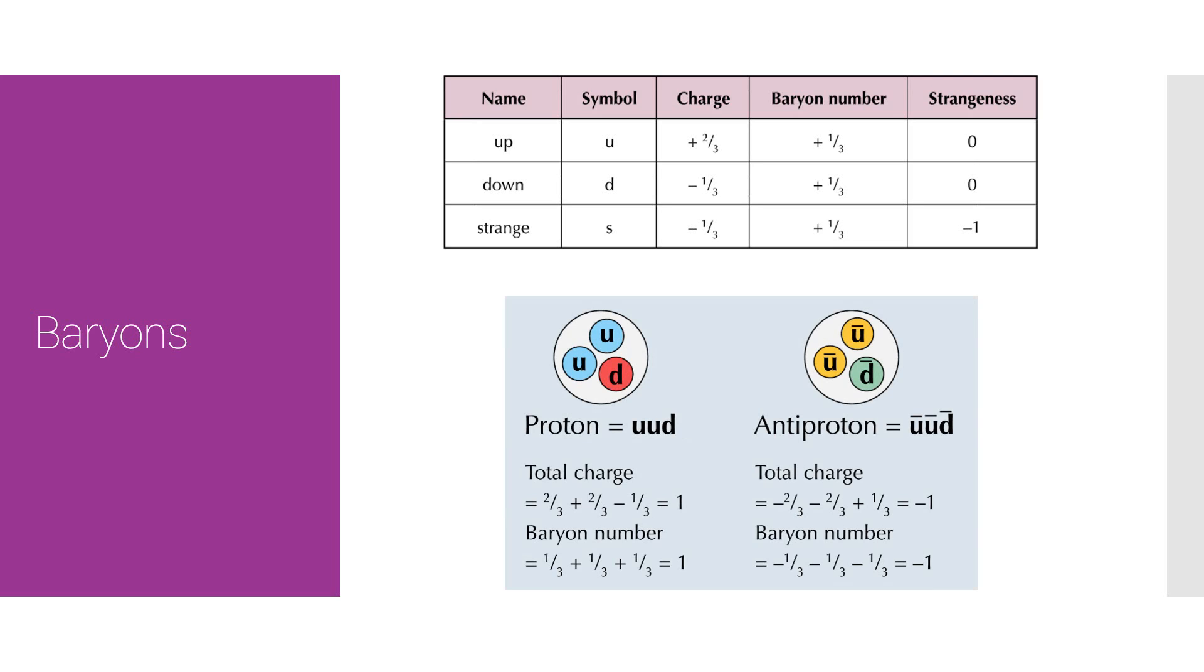Three quarks is always going to give you a baryon number of one, it's inevitable, unless of course, antiquarks. As you can see, with antiquarks, all the quantum properties are shifted. Instead of the up quark having two-thirds charge, it's got minus two-thirds charge, and the anti-up has minus two-thirds charge, and the anti-down, instead of having minus a third, has plus a third, which results in a total charge of minus one.